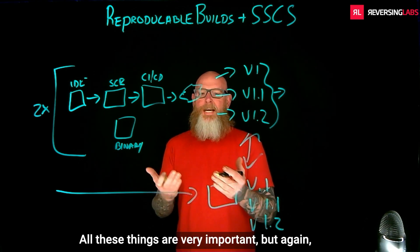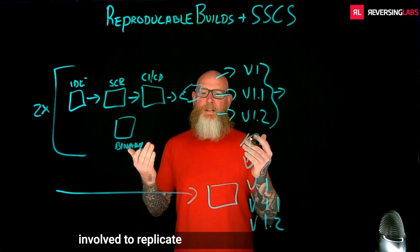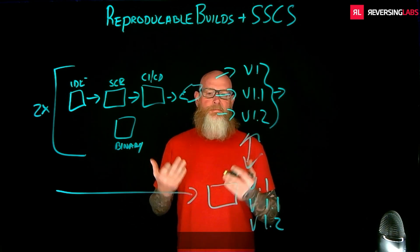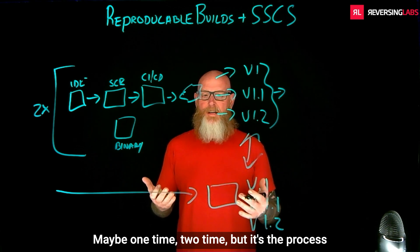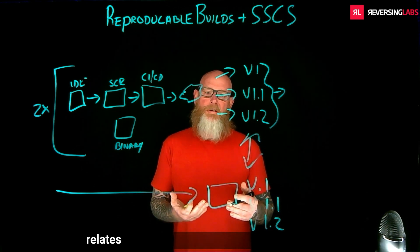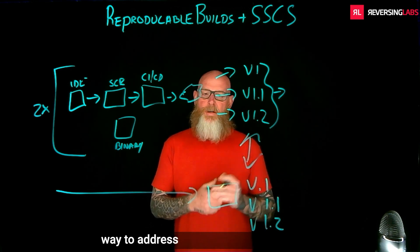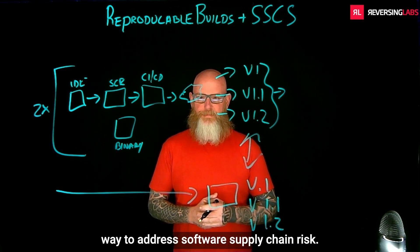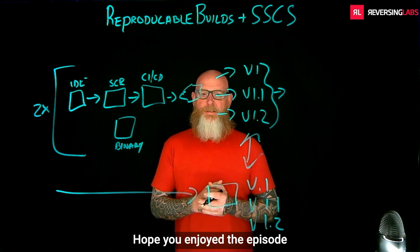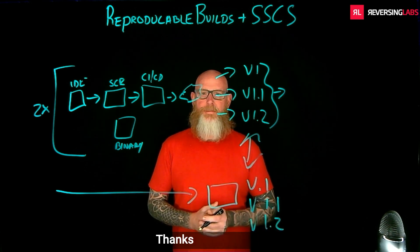All these things are very important. There is care and feeding involved, and there is a cost to replicate a build pipeline multiple times — maybe one time, two times — but it's the process and definition of reproducible builds and how it's a very advanced and effective way to address software supply chain risk. I'm Matt Rose. This is Reversing Glass. Hope you enjoyed the episode today on reproducible builds and software supply chain security. Thanks for watching.